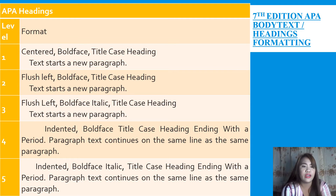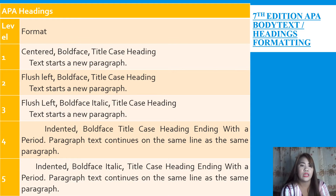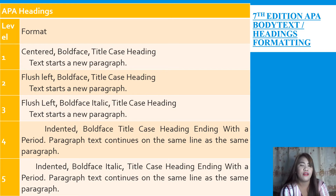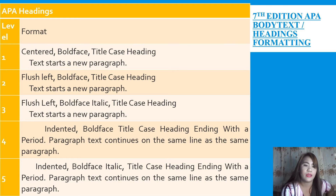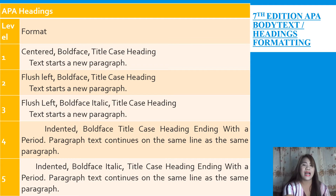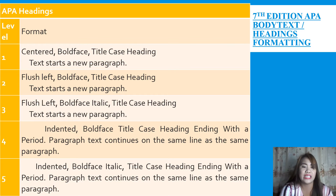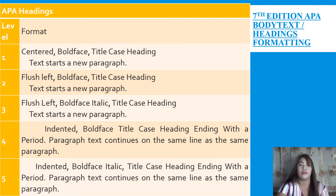For the 7th edition APA format for body text and headings: Level 1 is centered, bold, title case heading — text starts as a new paragraph. Level 2 is flush left, bold, title case heading — text starts as a new paragraph. Level 3 is flush left, bold, italic, title case heading — text starts as a new paragraph. Level 4 is indented, bold, title case heading, ending with a period — paragraph text continues on the same line. Level 5 is indented, bold, italic, title case heading, ending with a period — paragraph text continues on the same line.